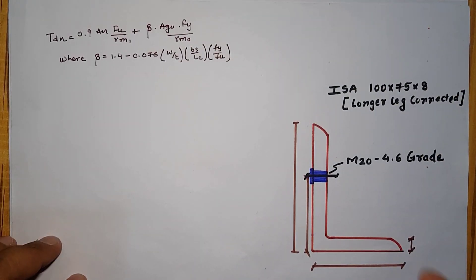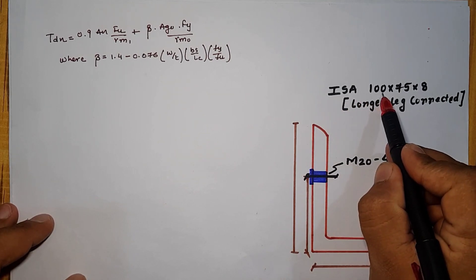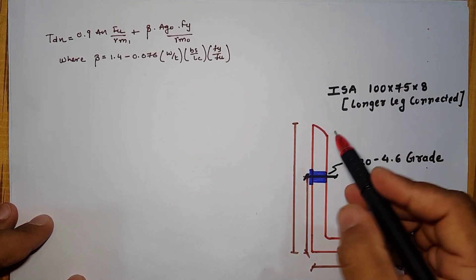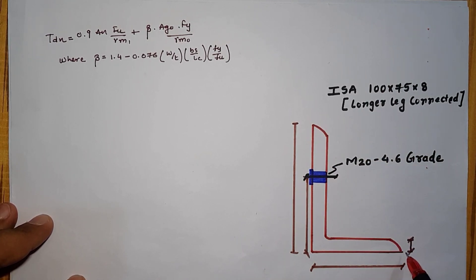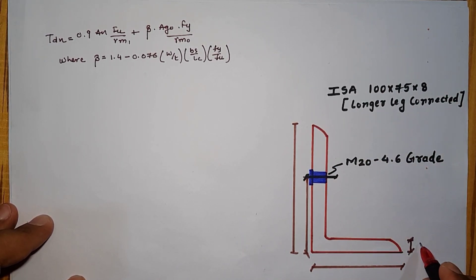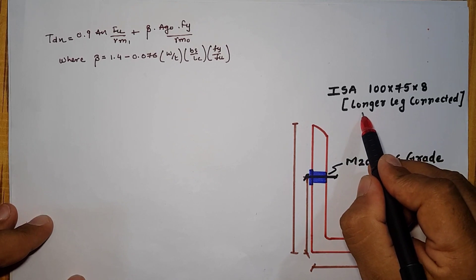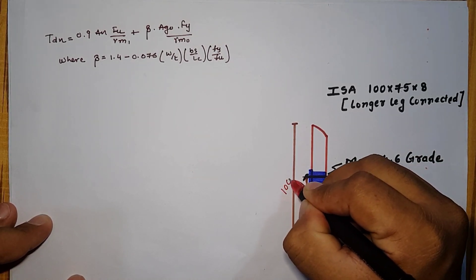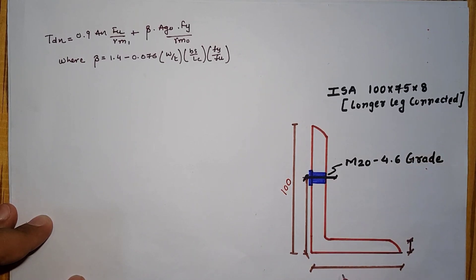Assuming that the ISA section is given as 100 by 75 by 8 where 100 is longer leg, 75 is shorter leg and 8 is the thickness. And if we given as longer leg connected, it means that the vertical leg is connected, the horizontal leg is 75 and 8 mm thick.